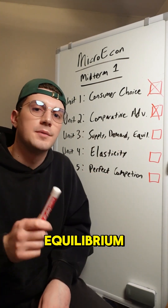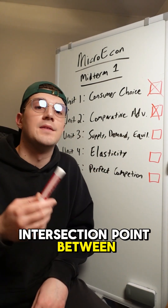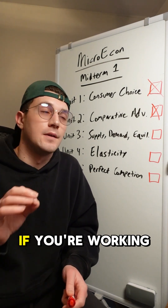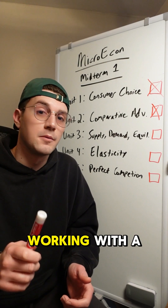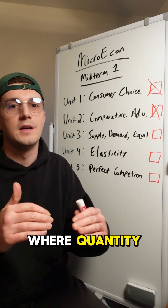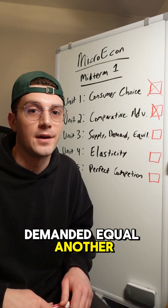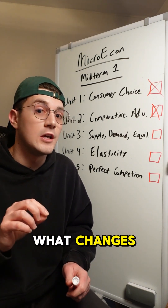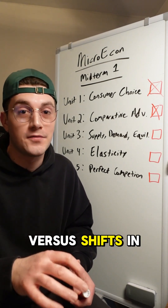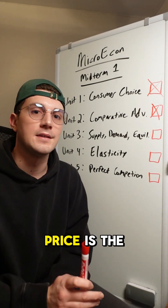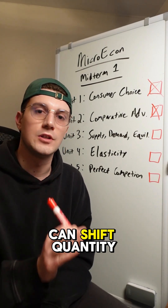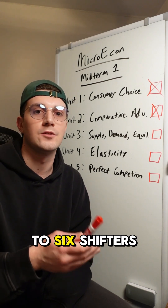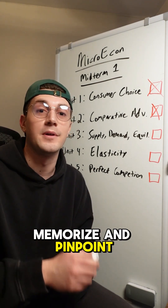Supply, demand, equilibrium. Equilibrium occurs at the intersection point between the supply and demand curves. If you're working with curves on a graph, it's easy to just see that point. If you're working with equations, set them equal to one another. If you're working with a table, find the price where quantity supplied and quantity demanded equal one another. An easy mistake students make is not understanding the difference between what changes quantity demanded or supplied versus shifts in supply or demand — the entire curves. Price is the only thing that can shift quantity supplied or demanded, whereas for the supply and demand curves there are four to six shifters for each that you need to memorize and pinpoint on your exam.